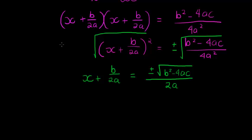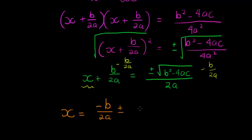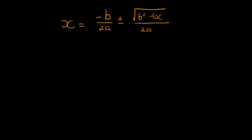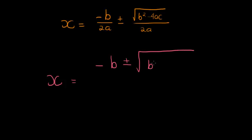Now we simply subtract b over 2a on both sides to get x on its own. And that's our final formula: x is equal to minus b plus or minus the square root of b squared minus 4ac, all over 2a. Since the denominators are the same, we add them together, and that is our final answer.